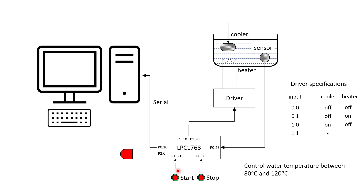We have a start button to begin system operation and a stop button to halt it. We use an interrupt for the stop button so that at any time the stop button is pressed, the system operation will be immediately stopped.